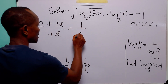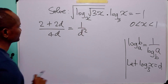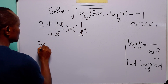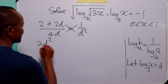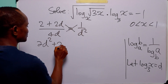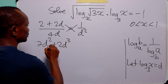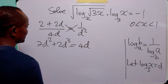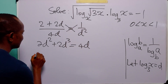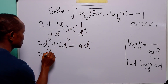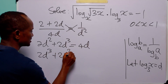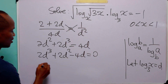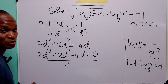Cross multiplying, we have 2d squared plus 2d cubed equals 4d. Rearranging this equation, we have 2d cubed plus 2d squared minus 4d equals 0. We can divide through the equation by 2.